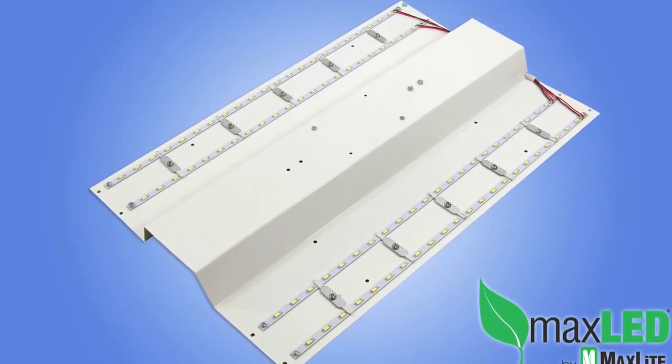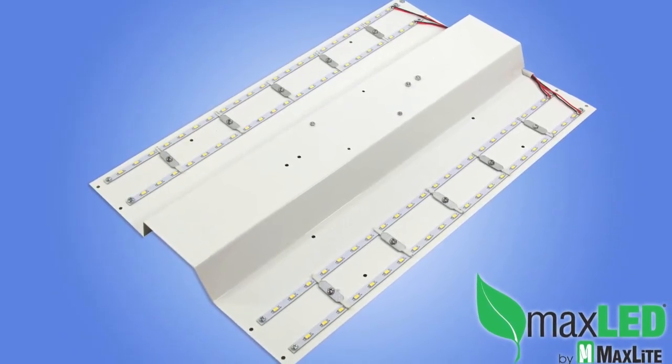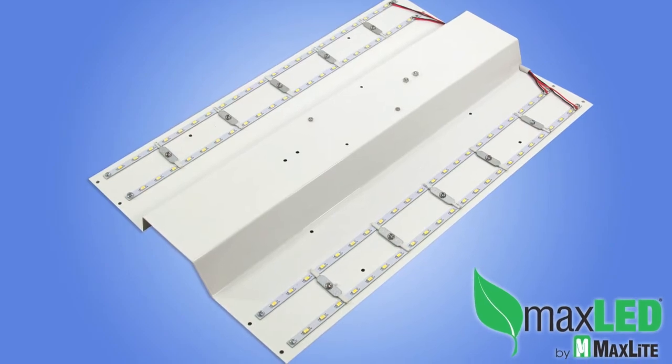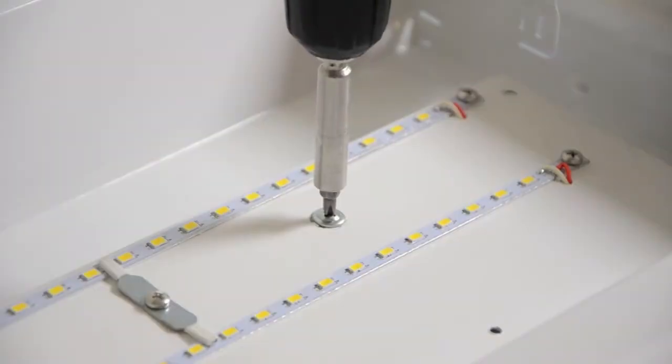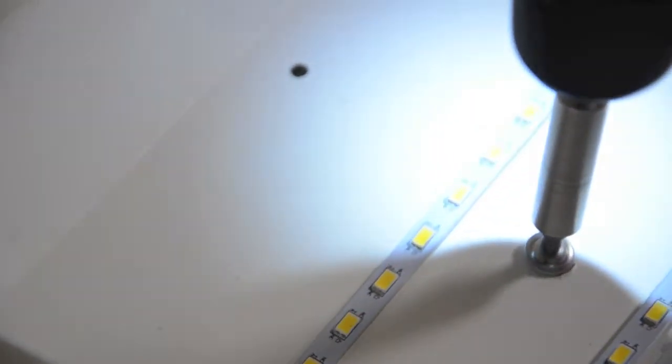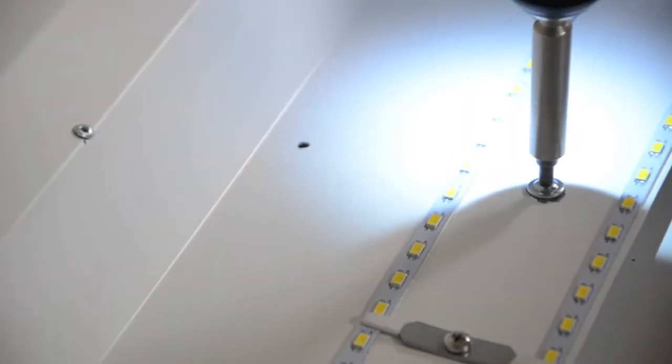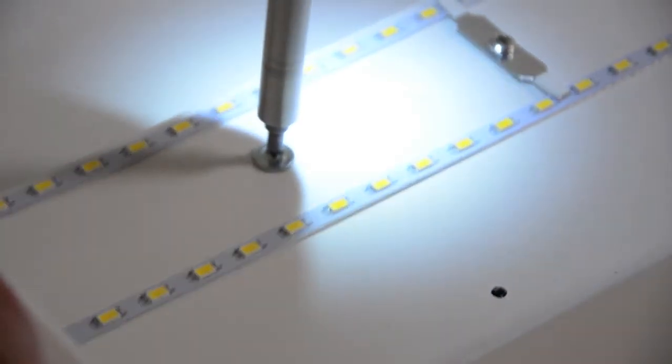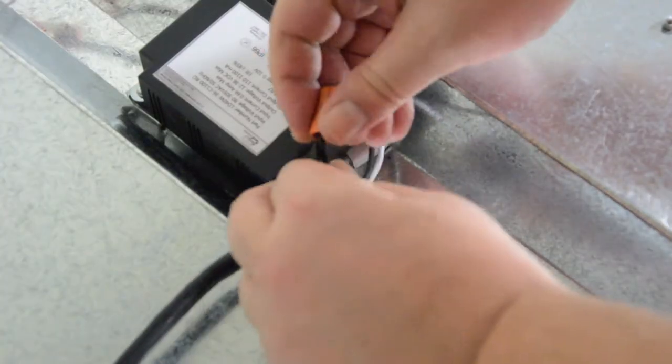Now the MaxLite Batwing Retrofit Kit is ready to mount. Carefully hold the kit square with the fixture and in the center. Screw the first corner self-drilling screw until it penetrates and pulls the kit up into the fixture. Do the same in the opposite corner. Now the fixture will hold in place while you do the same for the remaining screws.